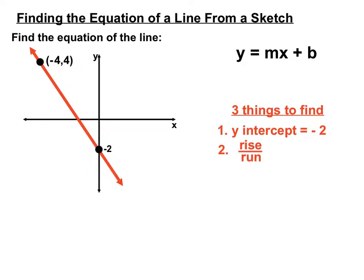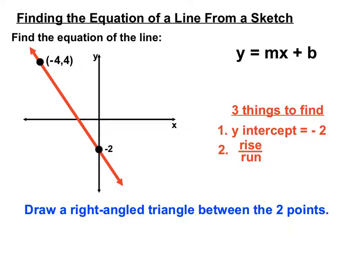Another bit of information we'll find is the rise over run. We'll compare the vertical and horizontal components of these two bits of information we have. We will draw a right angle triangle between the two points. That will help us break this up into a vertical component and a horizontal component. Let's draw a little right angle triangle between these two points. We'll go across from our y-intercept and we'll go up and make that a right angle.